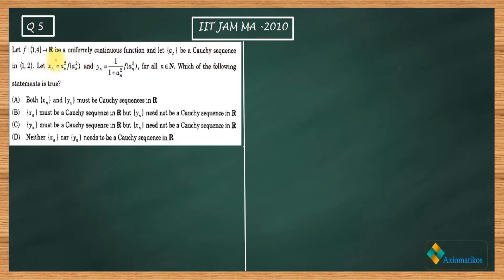xn and yn are defined for all n belonging to the natural numbers. The question asks which of the following statements is true — whether both xn and yn must be Cauchy, and similar options. You need to check whether they are Cauchy or not.